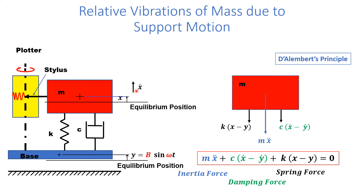Similarly, if X-dot is greater than Y-dot — where Y-dot is the velocity of the base upwards and X-dot is the velocity of the mass — the damper's piston and cylinder will have a relative velocity of X-dot minus Y-dot. So the damping force will be C times that relative velocity, C(Ẋ − Ẏ), and this damper offers resistance to the upward movement of the mass, so the damping force acts downwards.